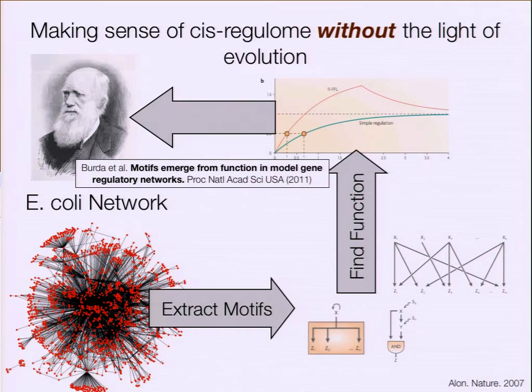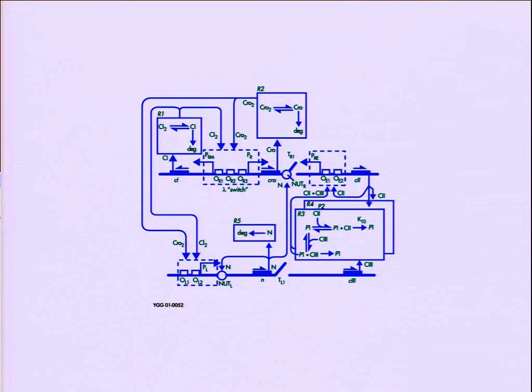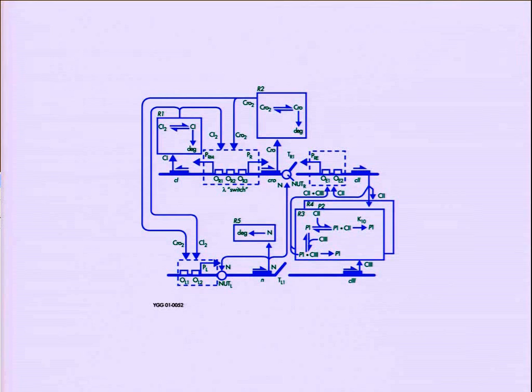The theory would tell us that we can draw these networks like circuit diagrams. Once you enumerate the cis-regulatory network, you can make these beautiful diagrams, something akin to an engineering circuit. But the interesting thing about biology is we're continuing to develop new technologies to actually understand these networks better, and we're finding that this isn't the case.